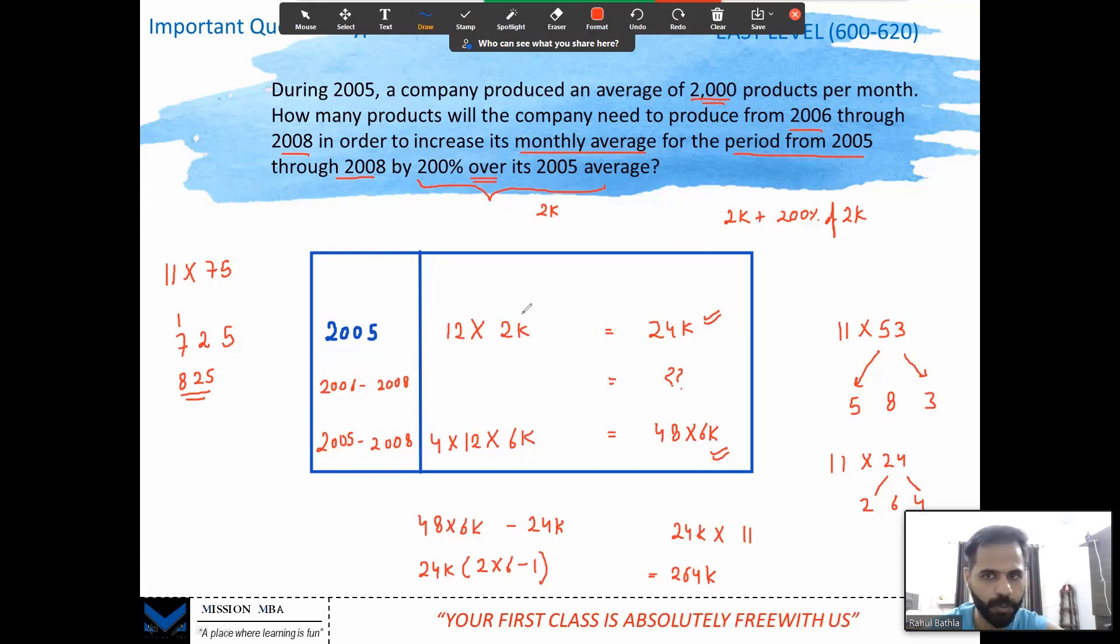So that's how you deal with these kind of questions. Make the table, write down 2005, 2005 to 8 total, and you'll find the missing one. Quite simple. So the answer is 264k. Let's go ahead to the next question.